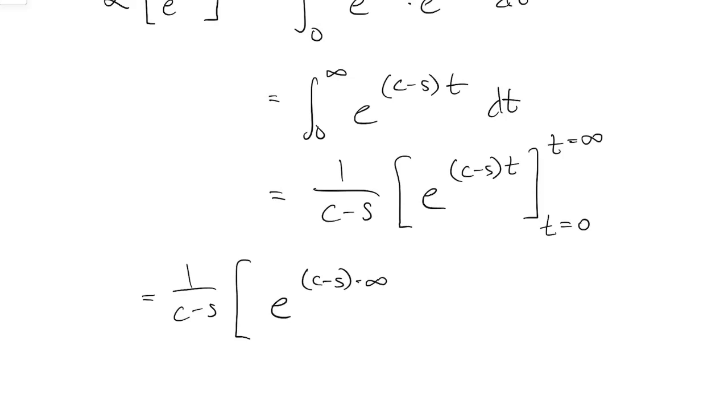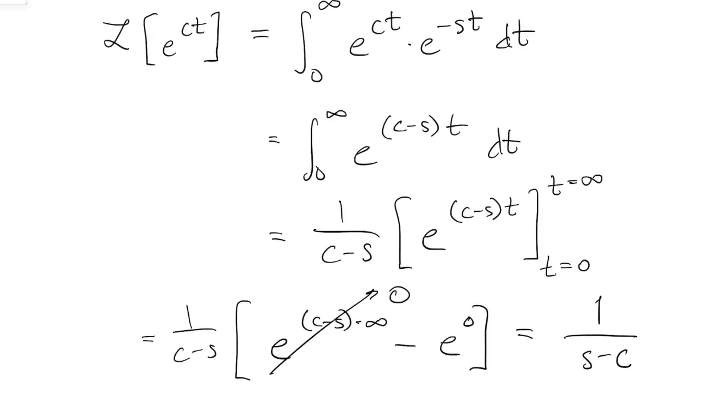And so that's e to the negative infinity. And that whole thing will just be zero. We won't worry about it. The other term is just one. And so the whole thing is just one over s minus c. So the Laplace transform of e to the ct is one over s minus c.